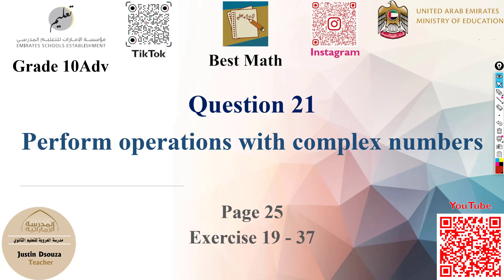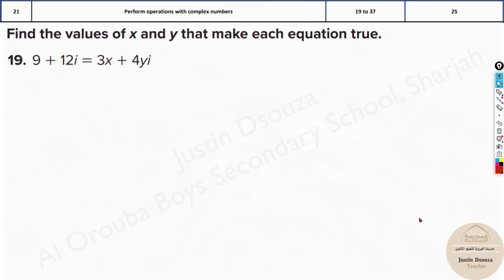We are now in the final question — question number 21, which is the last question in the writing part. It is to perform operations with complex numbers. The first part, finding x and y values, is the easiest among all the writing questions. Here we have an equation and you can see the i symbol — that i means it's an imaginary number.